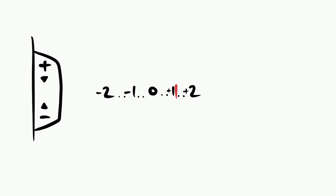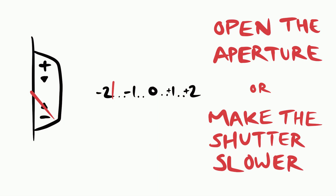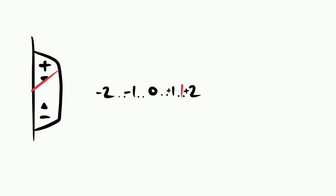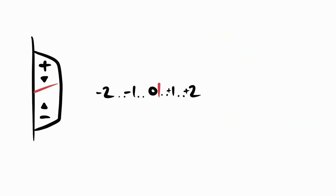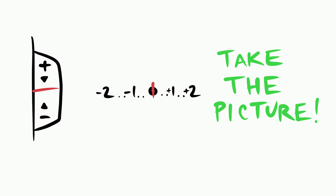Some light meters will even tell you exactly how underexposed or overexposed your photo is. If this needle is at the one, for example, that means you're one stop overexposed. So what do you do with this information? It's very simple. If you look at your light meter and you're underexposing, you need more light in your camera — open up your aperture or slow down your shutter. If you're overexposing your photo, you need to let less light in the camera — close down that aperture or speed up your shutter. But if your light meter is right in the middle, you're good to go. Click that shutter.